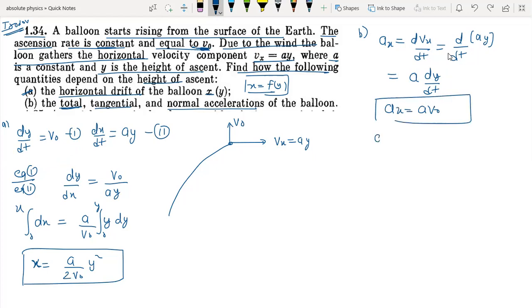Now for the y direction, ay is equal to dvy by dt. But given that the rate in y is constant and equal to v0, the y term is constant throughout. So if we differentiate it, dv0 by dt, and v0 is constant, this is equal to zero.